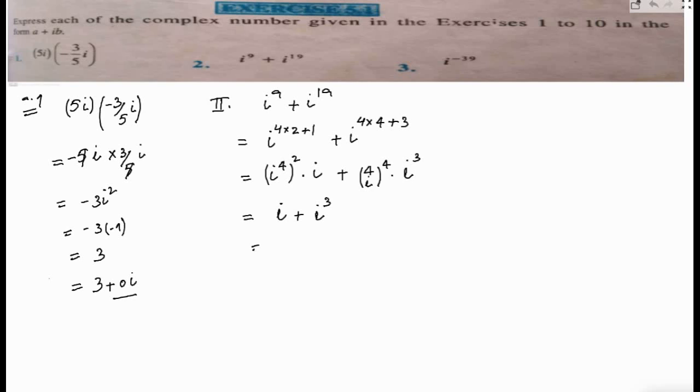So we get iota cubed. Now iota is iota, iota cube is negative iota, so the answer is zero. To write it in standard form, we write 0 plus 0 iota.